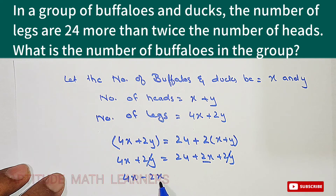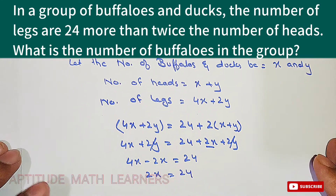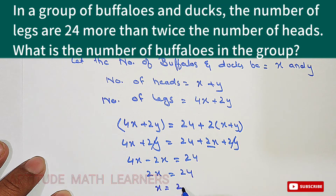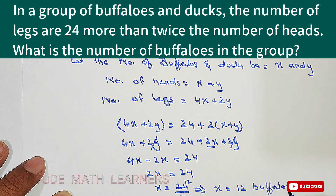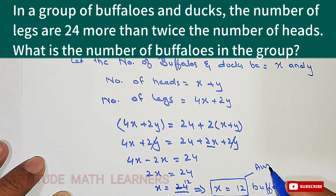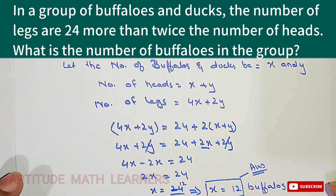So 2x equals 24, which gives x equals 24 divided by 2, which equals 12. Therefore, the number of buffaloes is 12. I hope you have understood the method completely. Thank you very much.